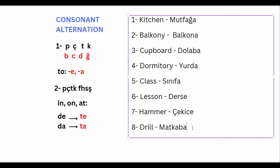Now let's try to practice the second rule. Let's say 'in the kitchen' — mutfak, with suffix da: 'mutfak-da.' But the last letter of the word is k, one of peçeteğe or fehseşe, so this needs to alternate to ta: 'mutfakta.' In the kitchen: mutfakta.